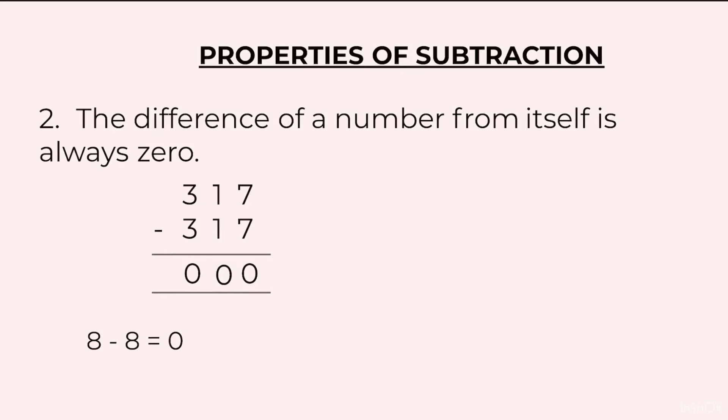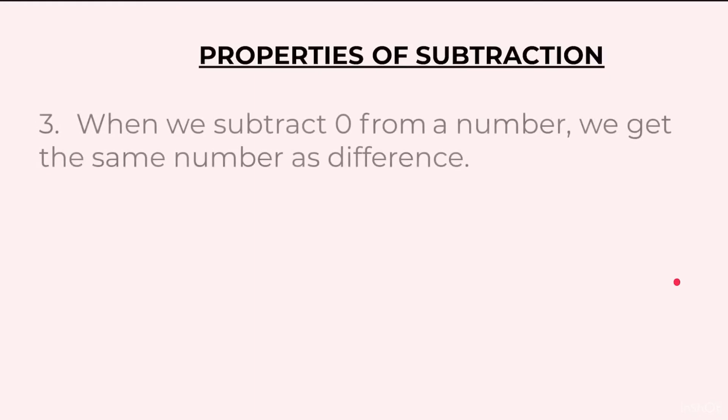Third property: when we subtract 0 from a number we get the same number as difference. Example: 317 minus 0, that means from 317 you are taking away 0, you will be left with 317. 63 minus 0, the difference will come out to be 63.